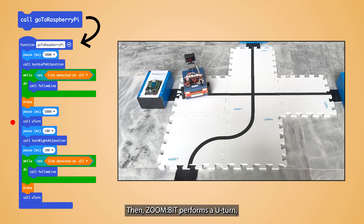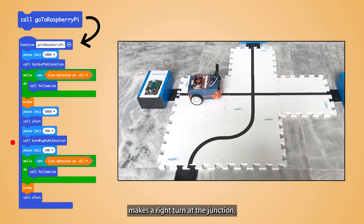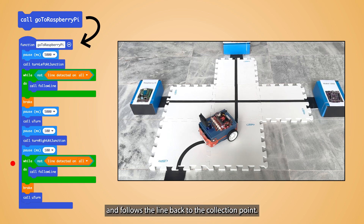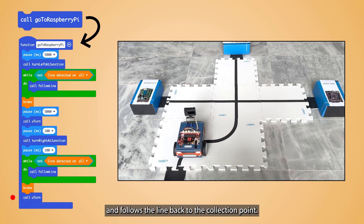Then ZoneBit performs a U-turn, makes a right turn at the junction, and follows the line back to the connection point.